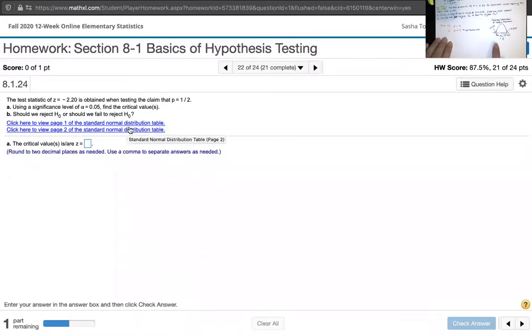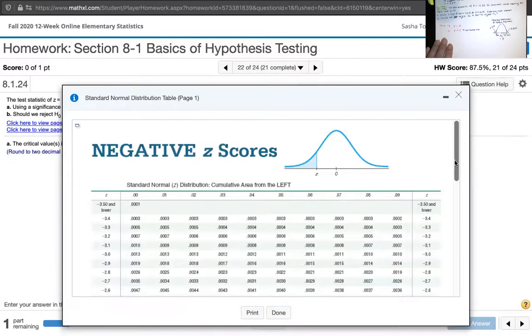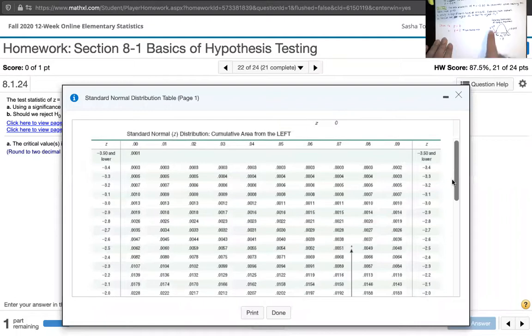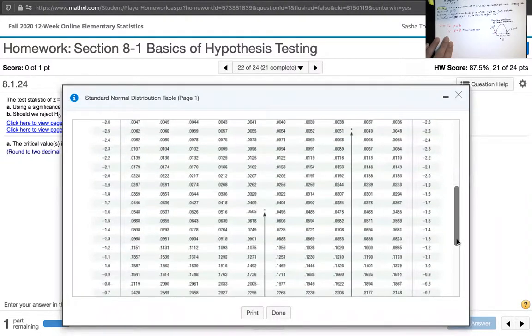I'm looking for this negative z-score. So I'll go to page one of our standard normal distribution. And I want the area to be 0.0250, so I'm looking for that in the body of the table. There it is right there. That corresponds to negative 1.96.